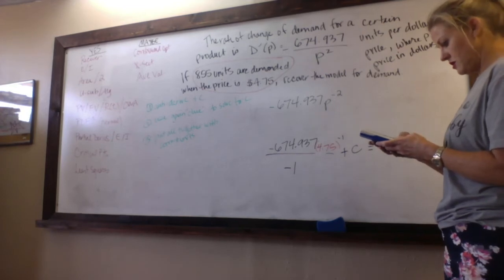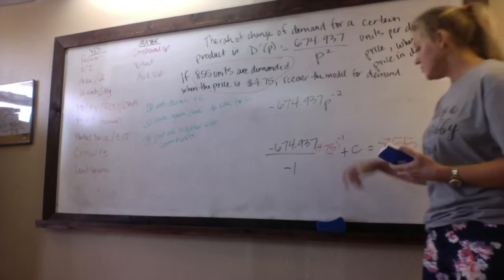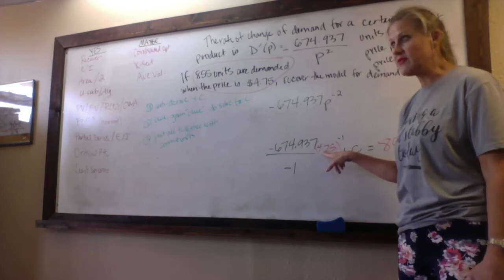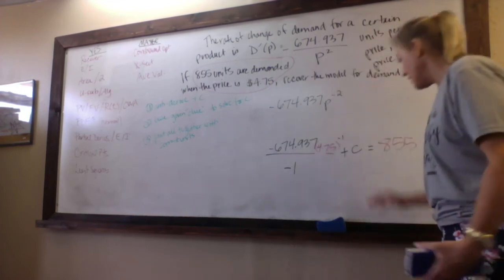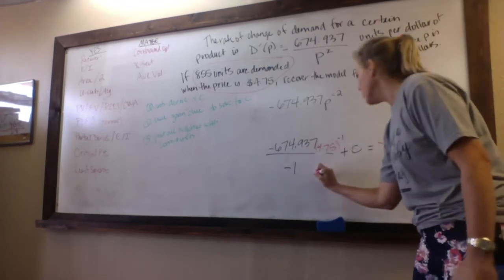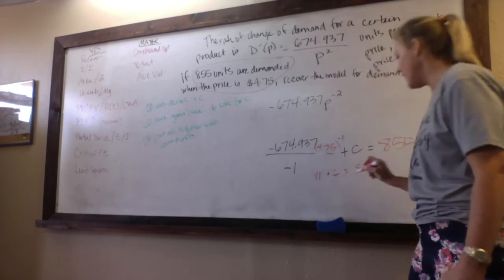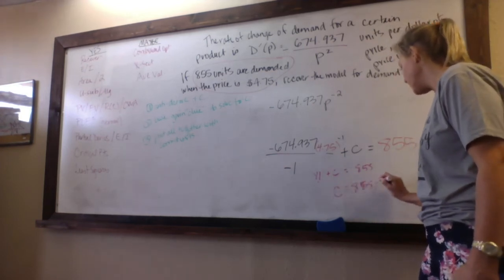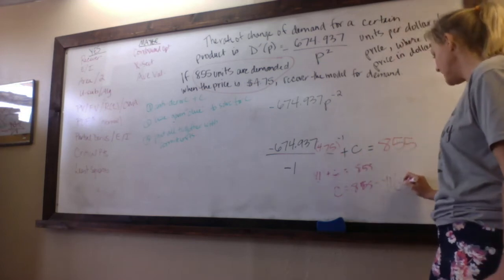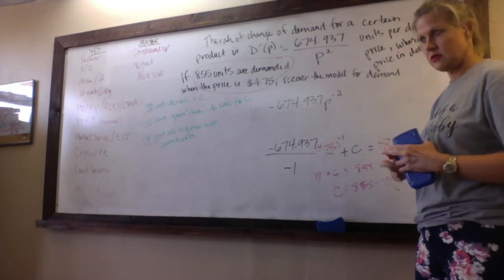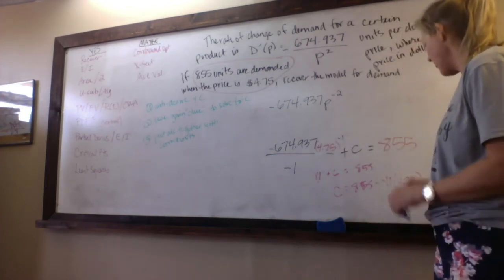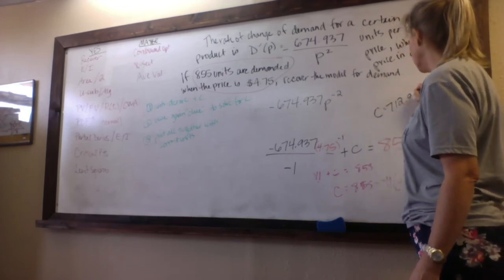I usually put this, I'll put that into Y1 leaving that as X or leaving that as the variable, and then I go to my home screen. So then I would have Y1 plus C is 855, and if I subtract the Y1, C is equal to 855 minus Y1 with that plugged in. So that's how I solve these. I got C is 712.908. So that's step 2, use the given clue to solve for C.